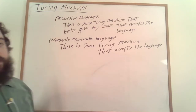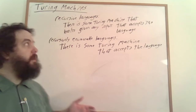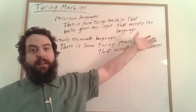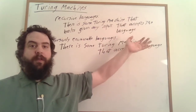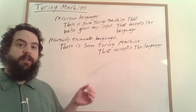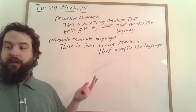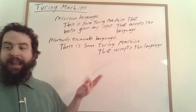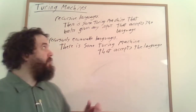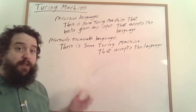The recursive languages are closed under complementation. Because they're required to halt given any particular input, you can simply switch the accept condition and the reject condition within the description of the Turing machine. The recursive languages also have a bunch of other really exciting closure properties, such as closure under concatenation, closure under Kleene star, closure under union and intersection, and difference.